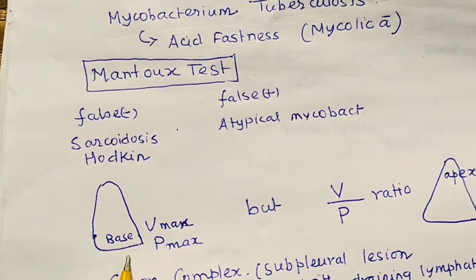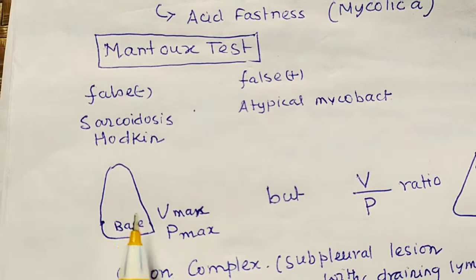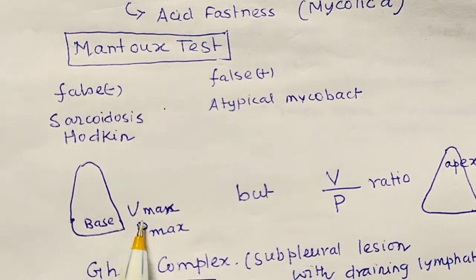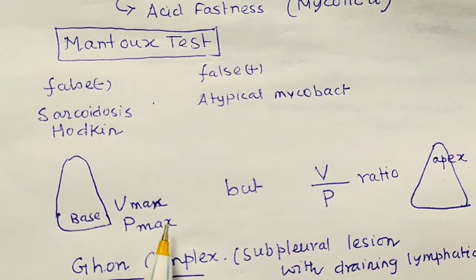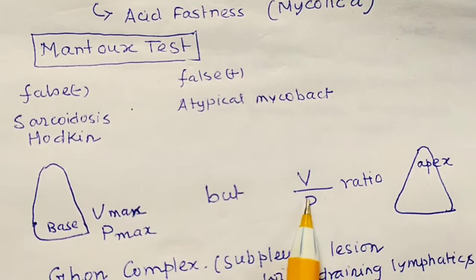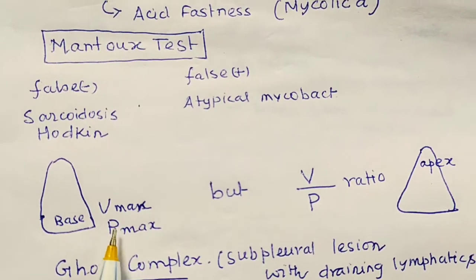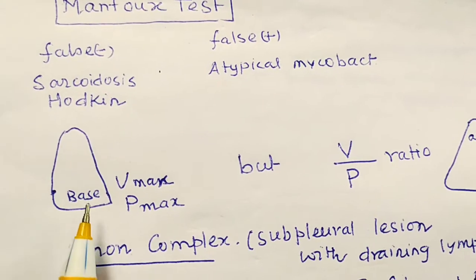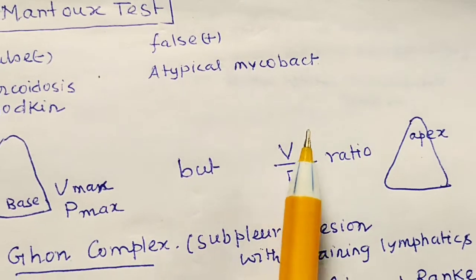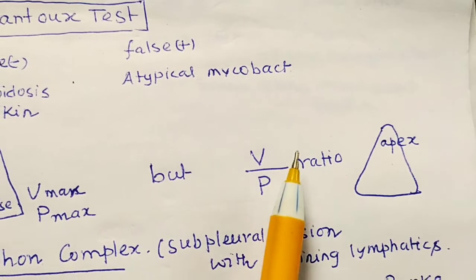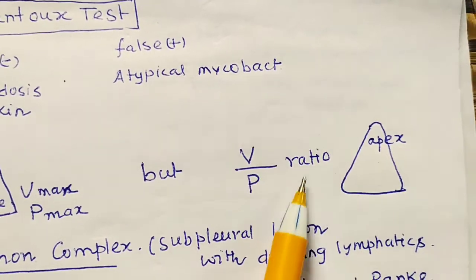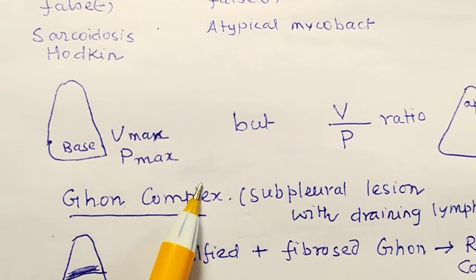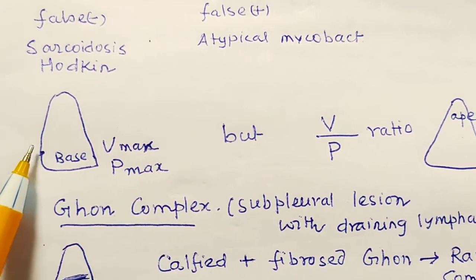Now consider the lung. At the base of the lung, both ventilation and perfusion are maximum. However, the ventilation to perfusion ratio (V/Q ratio) is maximum at the apex, even though both ventilation and perfusion individually are maximum at the base.